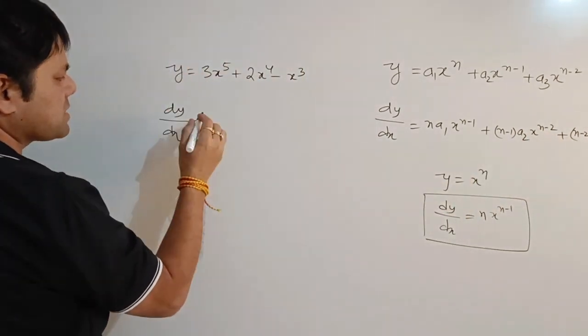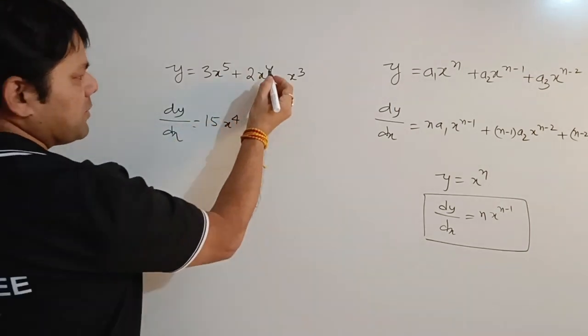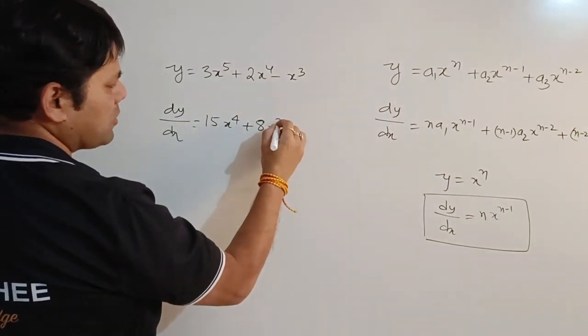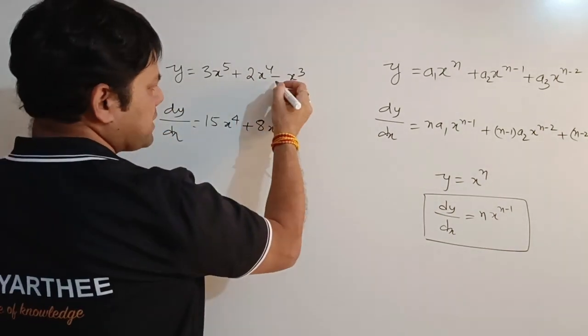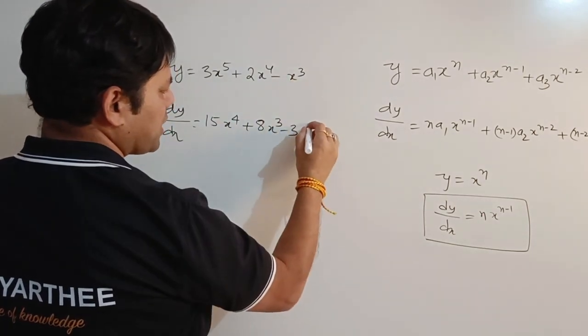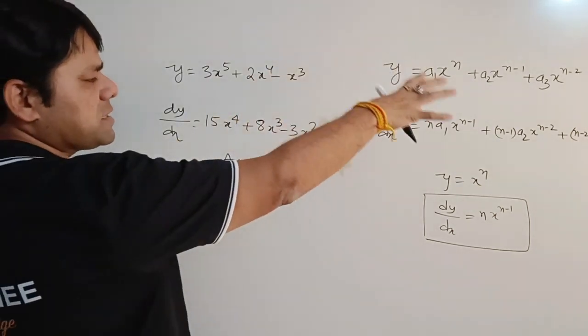We will multiply the power with the coefficient. It becomes 15 times x to the power 4. Multiply 4 with 2, it becomes 8 times x to the power 3. Multiply 3 with minus 1, this becomes minus 3 x to the power 2. This is your answer. I hope you understand this part.